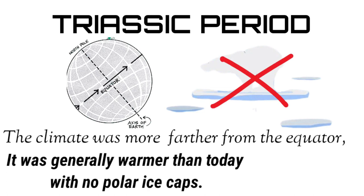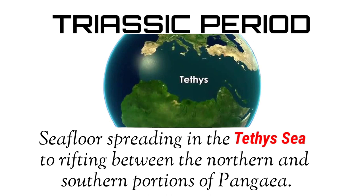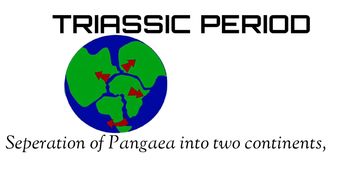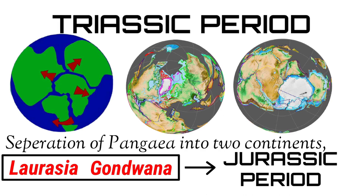Although the climate was more moderate further from the equator, it was generally warmer than today with no polar ice caps. Late in the Triassic, sea floor spreading in the Tethys Sea led to rifting between the northern and southern portions of Pangaea, which began the separation of Pangaea into two continents, Laurasia and Gondwana, which would be completed in the Jurassic period.